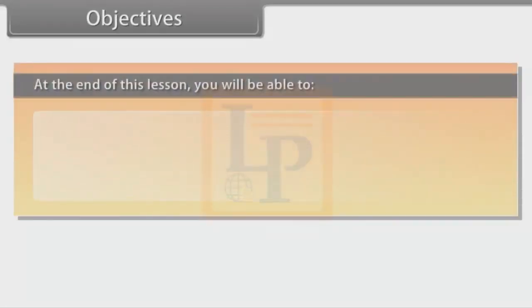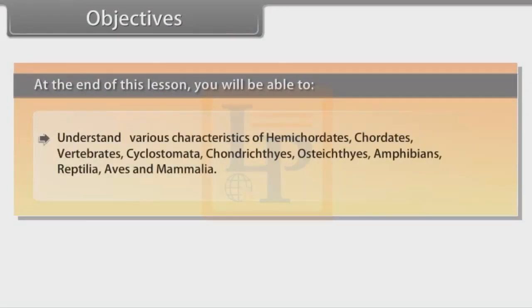Objectives: At the end of this lesson, you will be able to understand various characteristics of Hemichordates, Chordates, Vertebrates, Cyclostomata, Chondrichthyes, Osteichthyes, Amphibians, Reptilia, Aves and Mammalia.